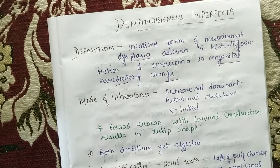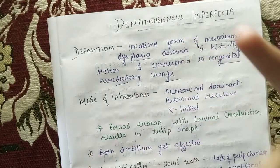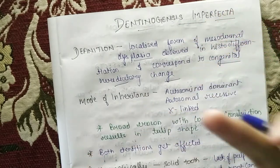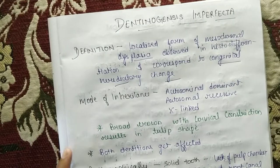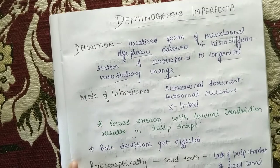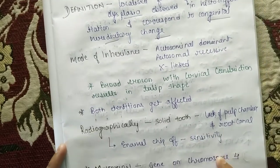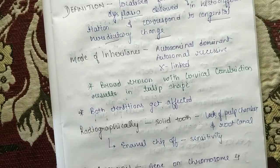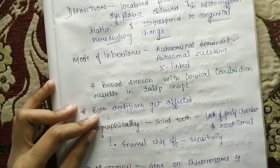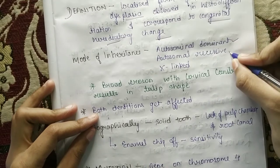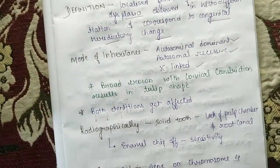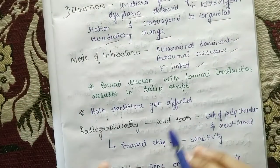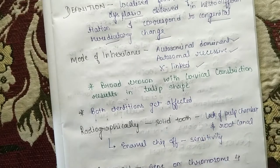Agar parents ke through koi gene mein kuch disturbance hai, uski wajah se — in terms of which genes are involved, we will read about that ahead. Next is mode of inheritance — it can be autosomal dominant, autosomal recessive, or X-linked. Now, broad crown with cervical constriction results in a tulip shape.